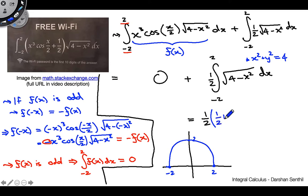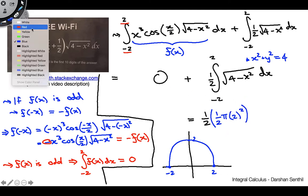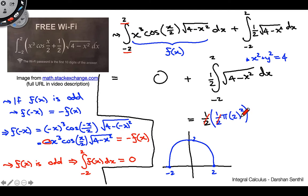So it'll be one half, pi, radius is 2, so it'll be 2 squared. Now, 2 squared is 4, so that's actually going to cancel out with both these one halves. And so what we're going to be left with in the end is just pi.